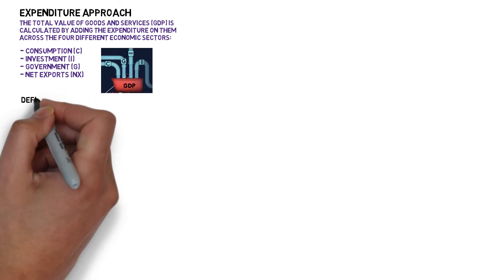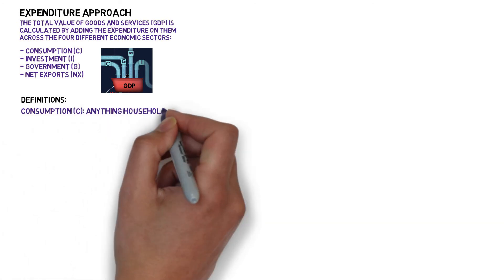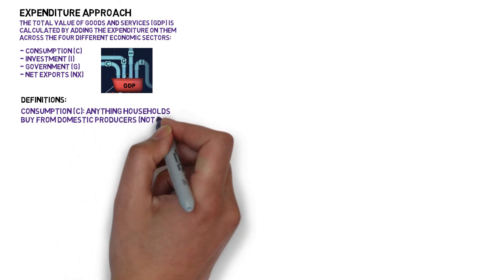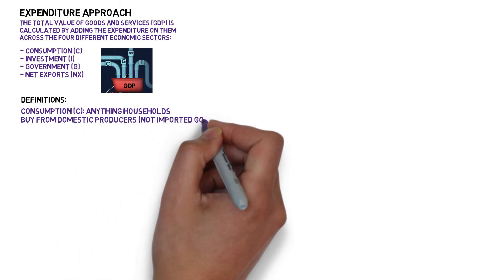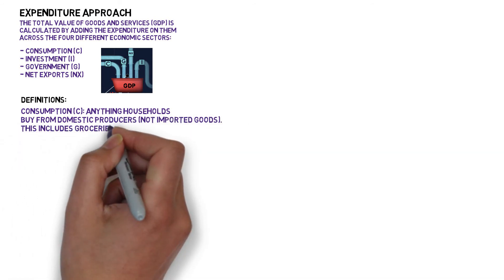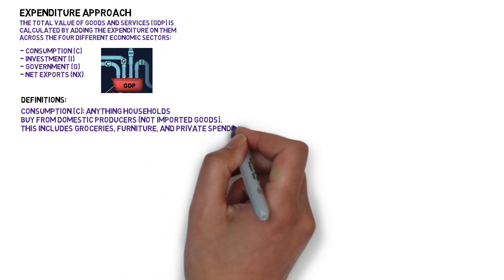So let's walk through the definitions of each of the four economic sectors and give some examples. Consumption expenditures are anything that households buy from domestic producers, so that doesn't include imported goods. This includes stuff like groceries, furniture, or private spending generally.